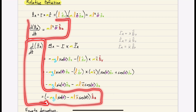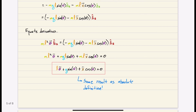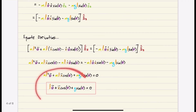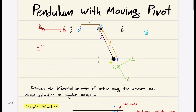Equating the two expressions, dotting both sides with EZ, canceling L and m, we end up with the exact same differential equation of motion as the absolute definition. Both definitions give the same result — use whichever you prefer. The absolute definition tends to be a bit easier, but as long as you understand the process and get the right answer, it doesn't matter.